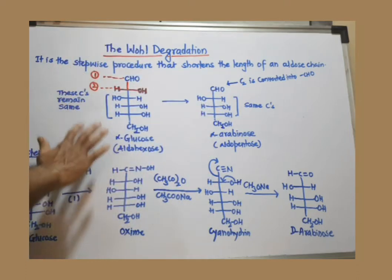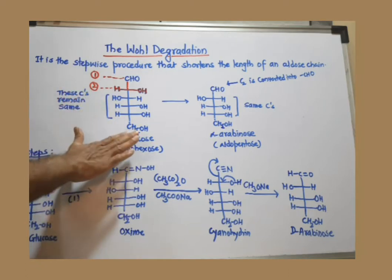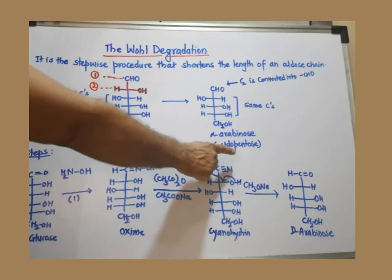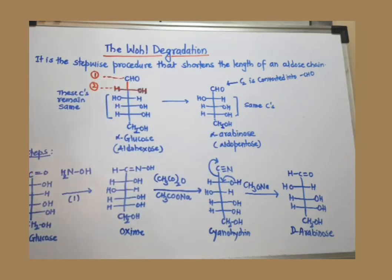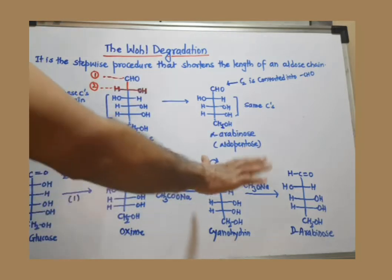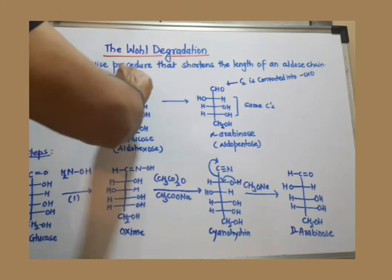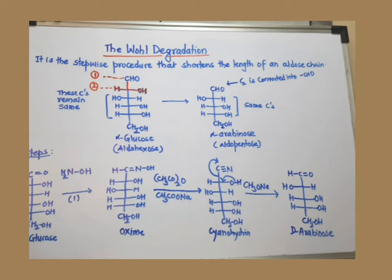So in Wohl degradation, the whole reaction takes place between carbon 1 and carbon 2. The cleavage occurs between C1 and C2, and the rest of the molecule remains the same with no change in configuration. You break C1 and C2, remove the aldehyde group, prepare a new aldehyde group at carbon number 2, and join the remaining portion as it is. When done with glucose, glucose is converted to arabinose, which is an aldopentose. This is a stepwise chain shortening reaction.